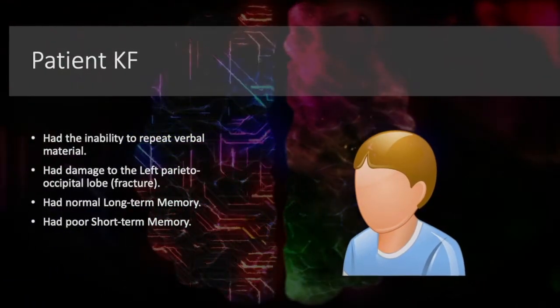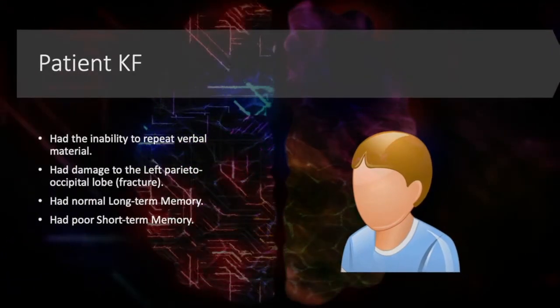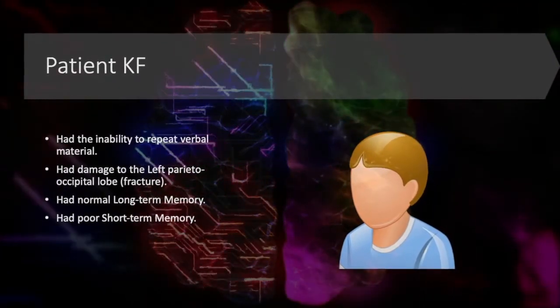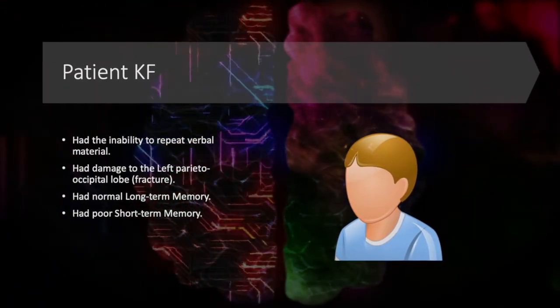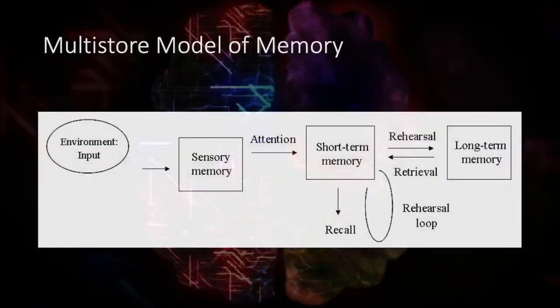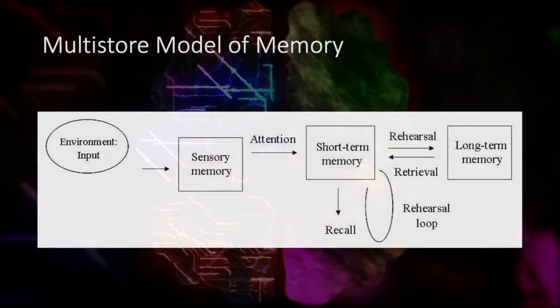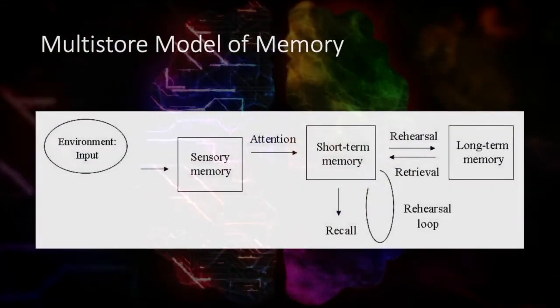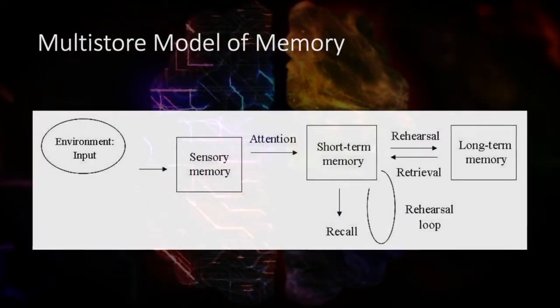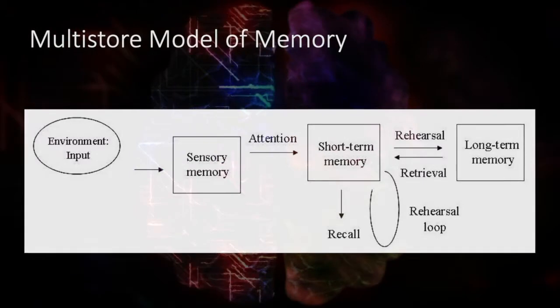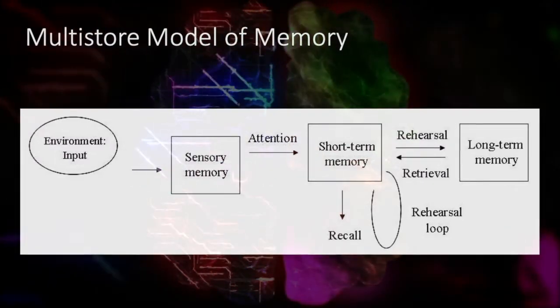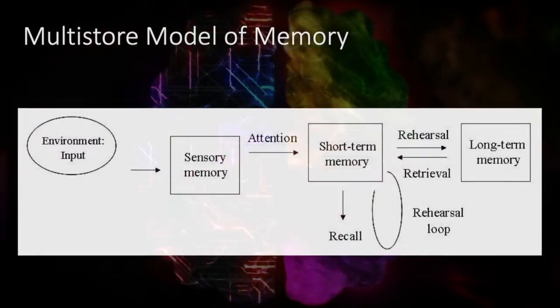Patient KF was found to be unable to repeat verbal material due to having damage in the left parietal occipital area causing a fracture. He had normal long-term memory but poor short-term memory. As a result, this led to the creation of the multi-store model of memory, whereby an object is perceived creating sensory stores, and then that moves into short-term storage and then long-term storage.